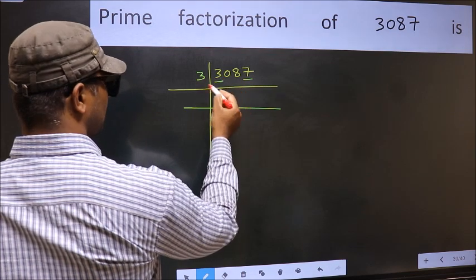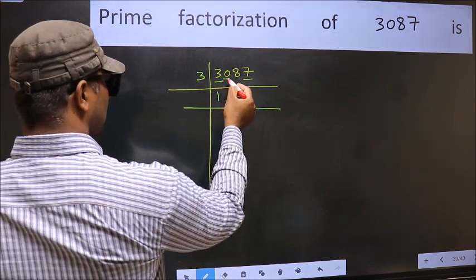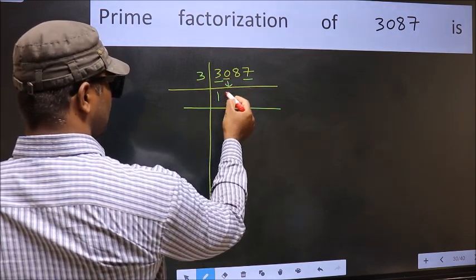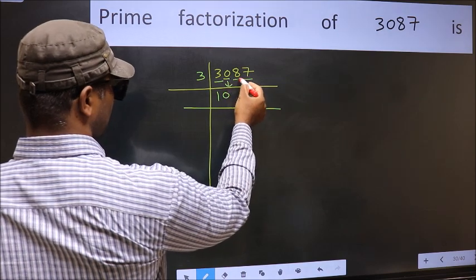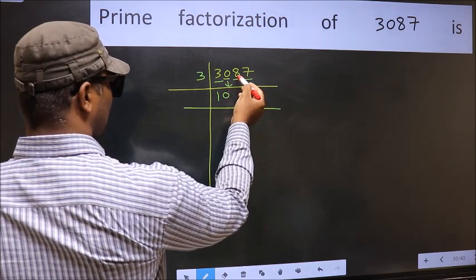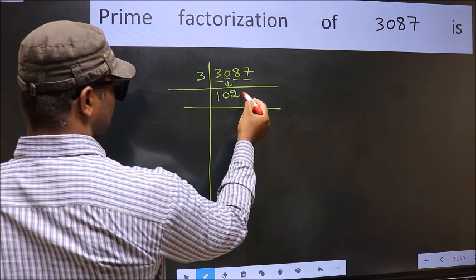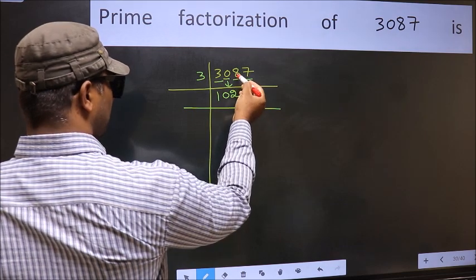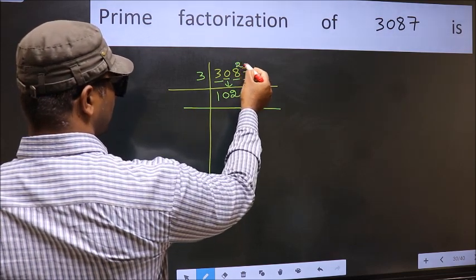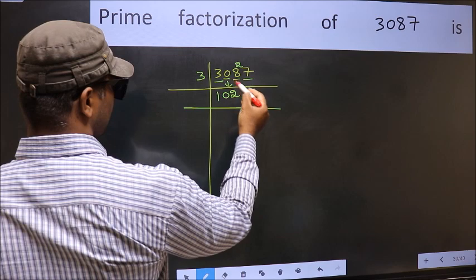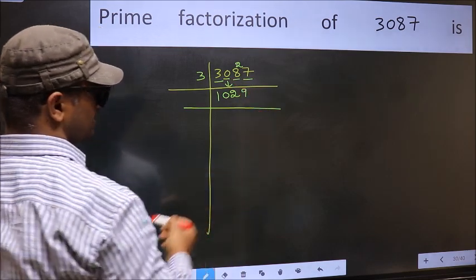First number 3 — 3 ones are 3. The other number 0, bring it down. Next number 8: a number close to 8 in the 3 times table is 6. 8 minus 6 is 2, carry forward — 27. 3 nines are 27. So 3087 divided by 3 gives 1029.